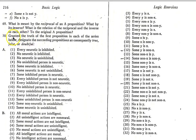Now, look at number 70. It says, granted the truth of the first proposition in each of this series, designate the succeeding propositions as consequently true, false, or doubtful. So he's telling us, pretend A, pretend number one, the A statement, every neurotic is inhibited is true. Pretend that's true. What happens to all these other statements?